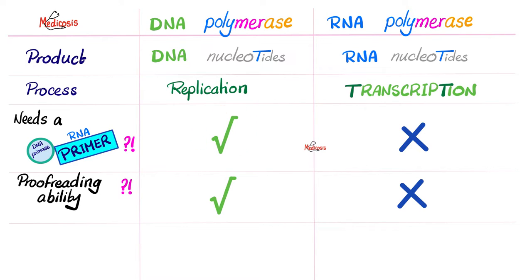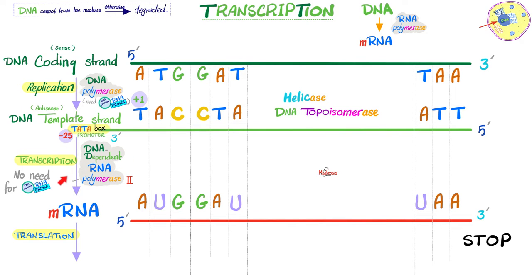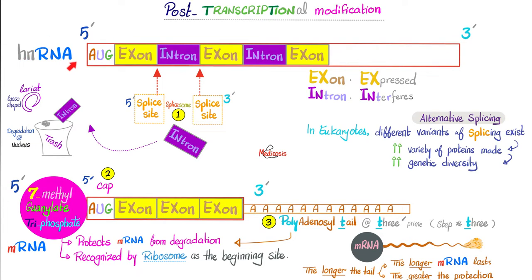After transcription, we have heterogeneous nuclear RNA. Let's convert it into mature messenger RNA, which can leave the nucleus and go to the cytoplasm. We do this through post-transcriptional modification — three main steps. Number one: splice the bad guys out — the introns. Step two: add a cap at the 5' end. Step three: add a tail at the 3' end. Here is the heterogeneous nuclear RNA — immature — because it still has the introns, it doesn't have a cap, and it doesn't have a tail. Let's modify it. After transcription, we modify the hnRNA to become mRNA.